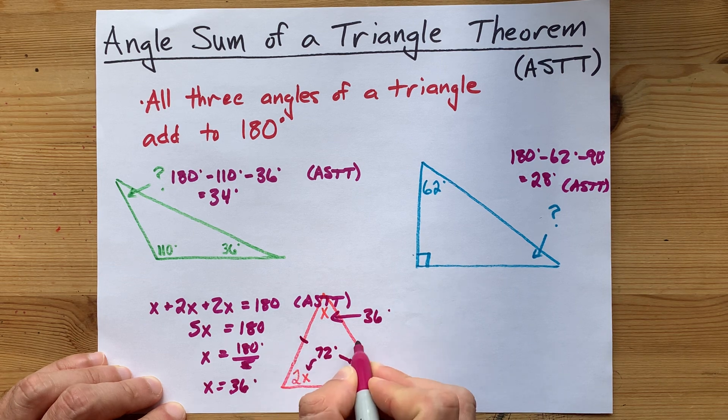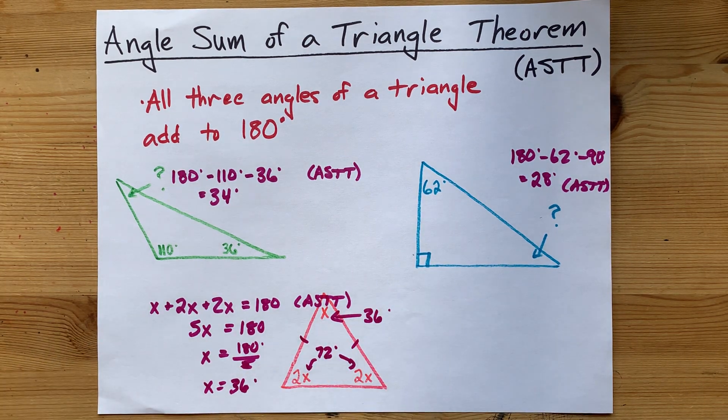If both of those were 2x, this would have been an isosceles triangle. But you didn't come here for that.